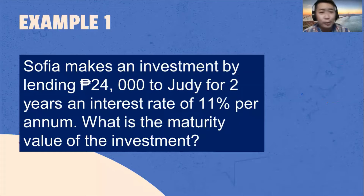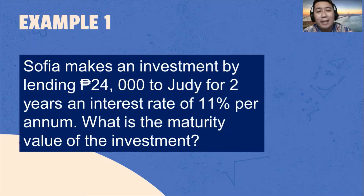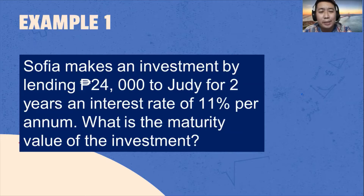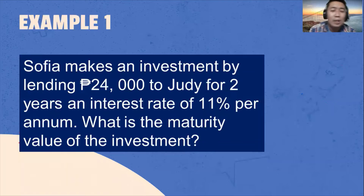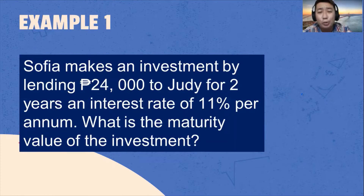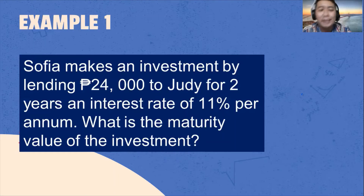Let's now try to solve this one. Sophia makes an investment by lending 24,000 pesos to Judy for two years with an interest rate of 11% per annum. What is the maturity value of the investment?